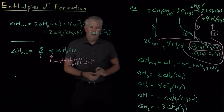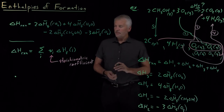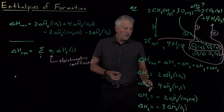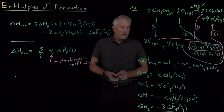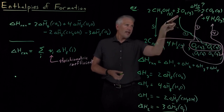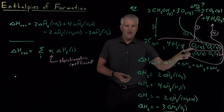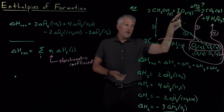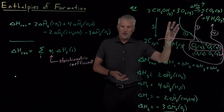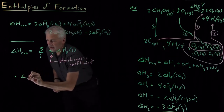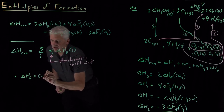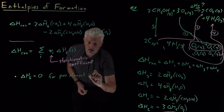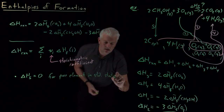A couple of comments about this process. We haven't plugged numbers in yet — that'll wait until the next video. But note that reaction number two, where three O2s turn into three O2s, doesn't actually do anything, because the reactant was already an element in its standard state. So it's always true that the heat of formation is zero for anything that's already a pure element in its standard state.